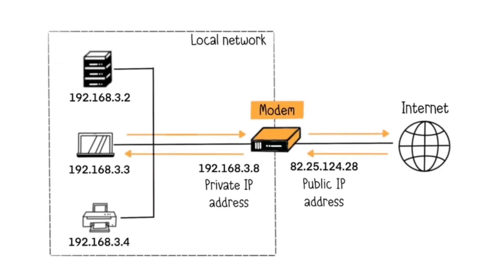But how does it work in practice? At home, in your private network, your personal devices each have a private IP address that isn't disclosed when you connect to the Internet. On the other hand, your modem has a private IP address on your local network side, and a public IP address on the Internet side. In other words, it's this public IP address that allows your modem, and thus your various connected devices, to access the Internet. Your modem, acting as a router, handles the proper transmission of data from one network to another — your private network to the Internet, and vice versa.